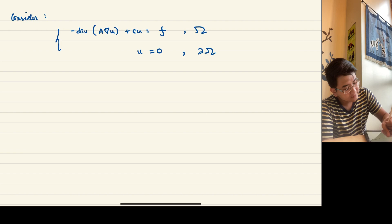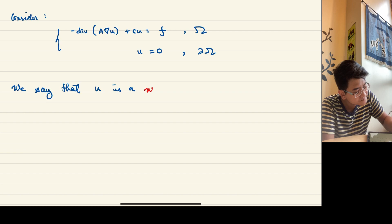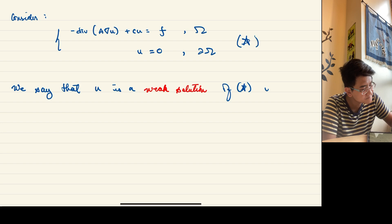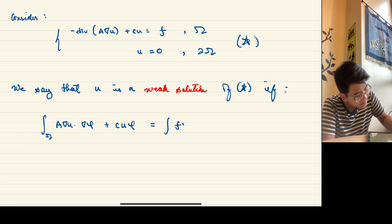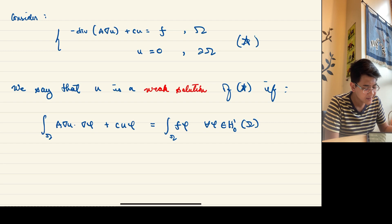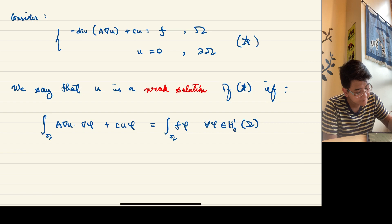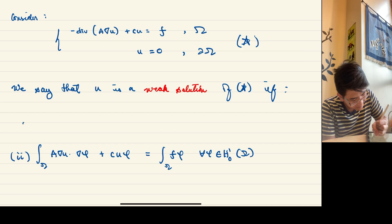We say U is a weak solution of the equation — call it star — if the following holds: the integral of A grad U dot grad phi plus C U phi equals the integral of F phi, for every phi in H^1_0(omega). This is a Sobolev space. The first condition is that U must be in H^1_0; the second condition is the integral identity above.